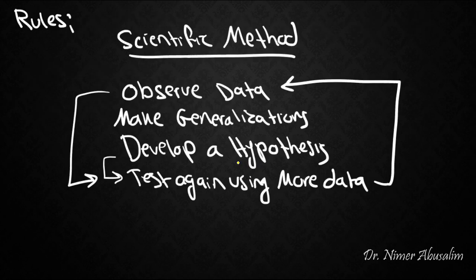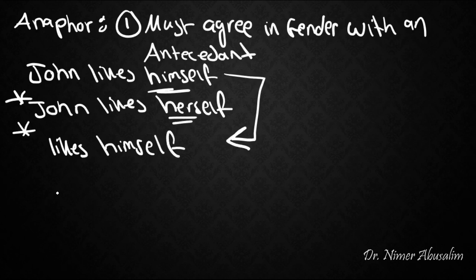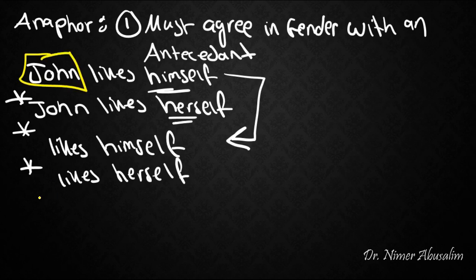So far we developed a hypothesis. But now we need to get some more data and test again. So let's add a bit more data. Now this was a grammatical sentence. I can change one thing and make the sentence ungrammatical. Likes himself. That's bad. Likes herself is also bad.